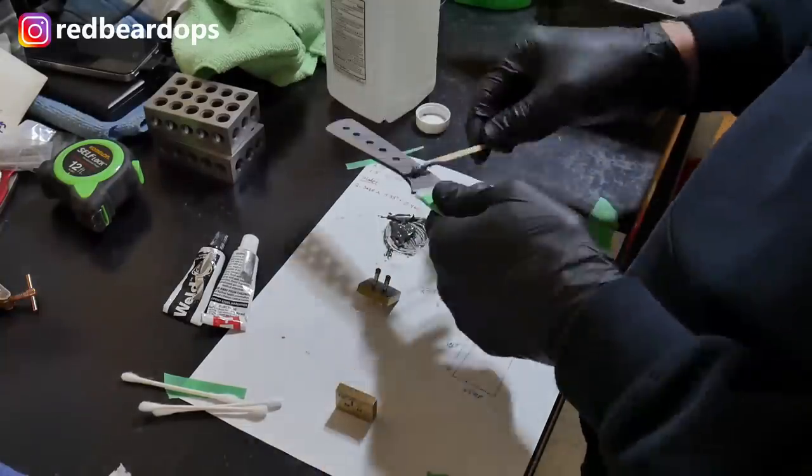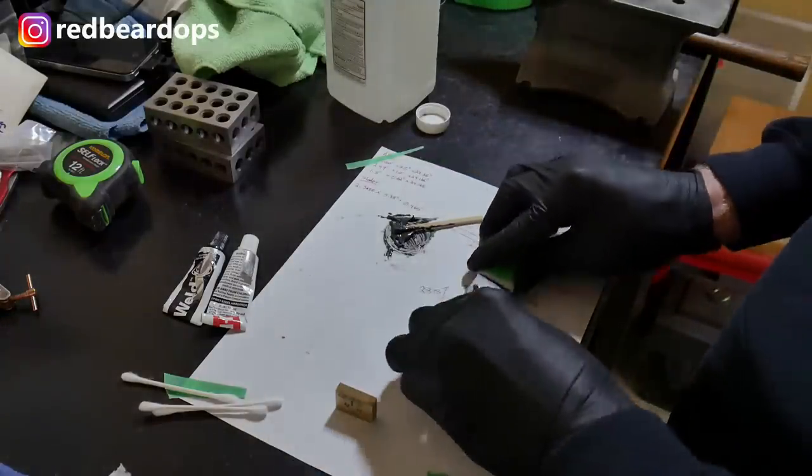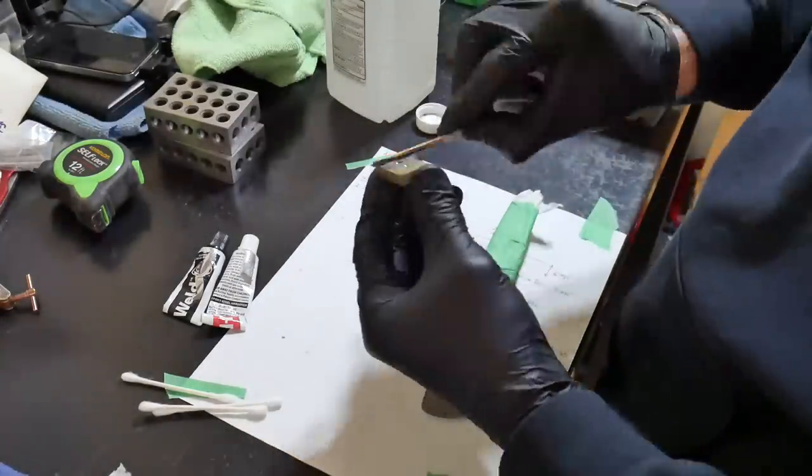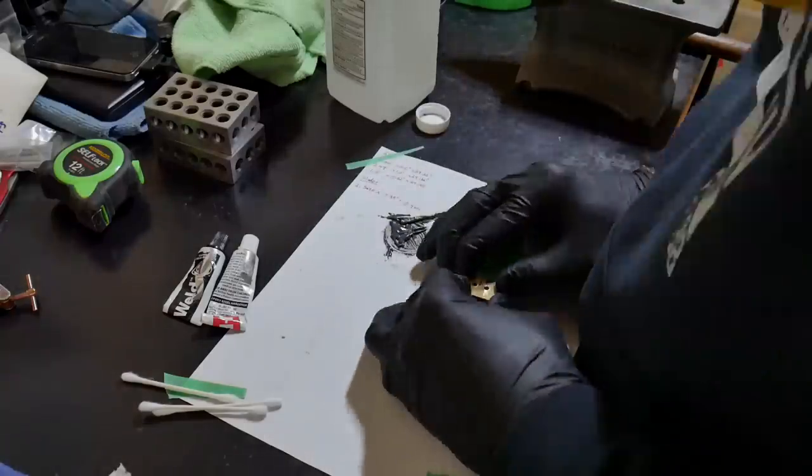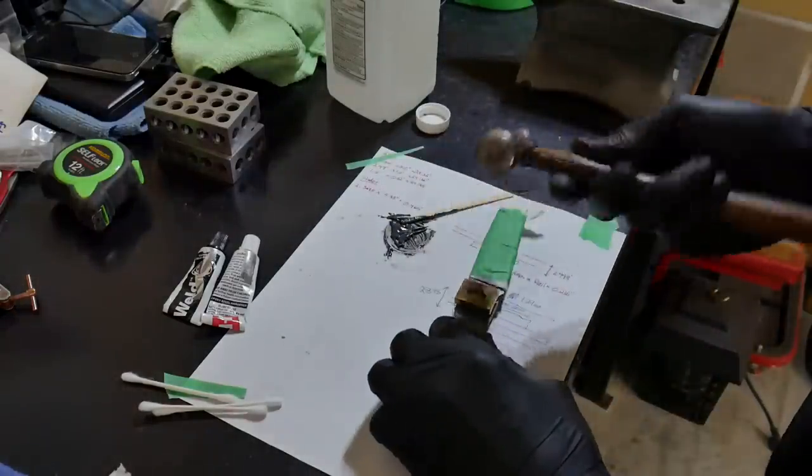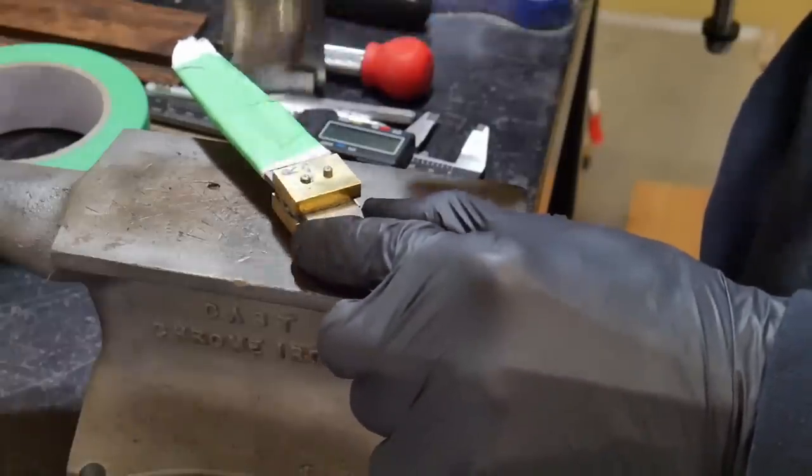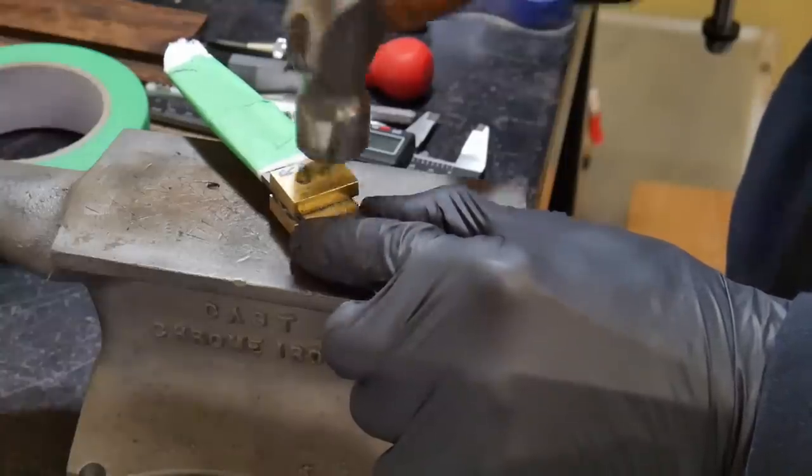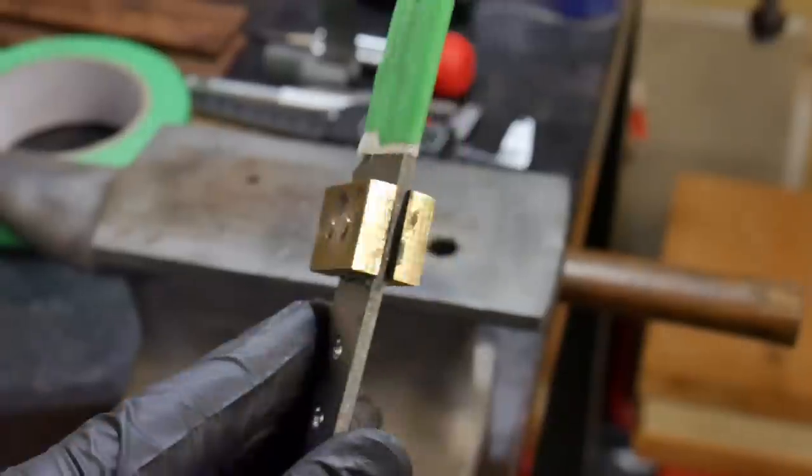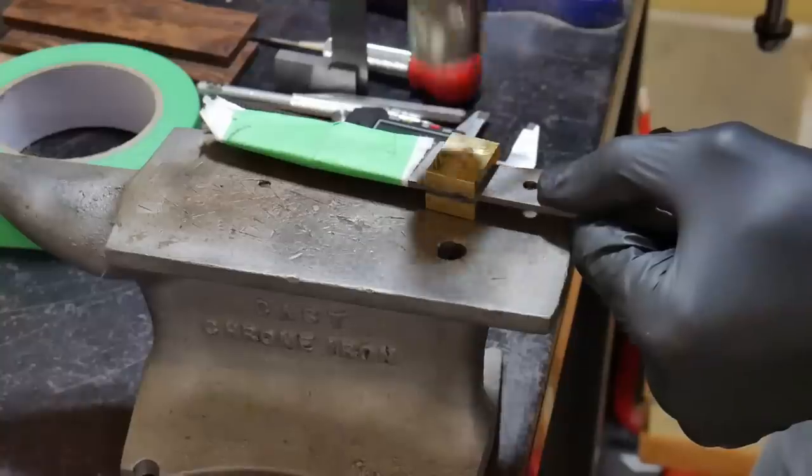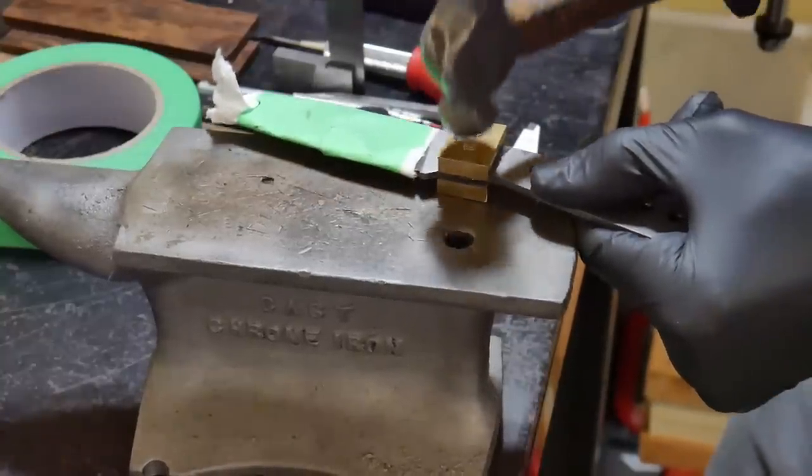Now I did make my pins a little too long as you'll see here, so I went over to the belt sander and took down the length of the pins on each side to make the peening process easier. You can see my pins are a little too long here. Took it over to the belt sander, knocked them down so that they're just proud of the bolsters, and then came back to my mini anvil here and started peening over those pins.